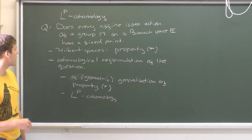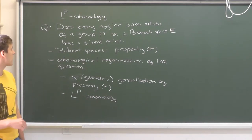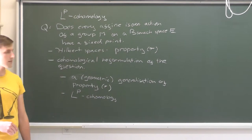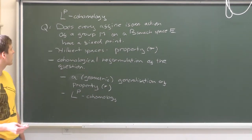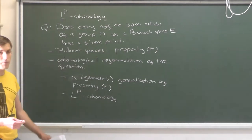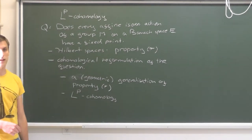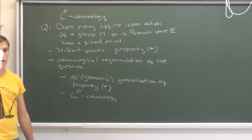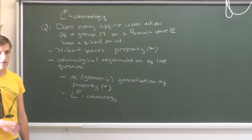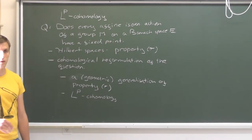Or, you take a group with Kazhdan property T, and then you ask: does it have fixed points on some LP spaces? This turns out to be non-trivial. When P grows large enough, the fixed point property will disappear. And we don't know what the optimal P is, whether the set where it disappears is connected or not — there will be a lot of structure there.